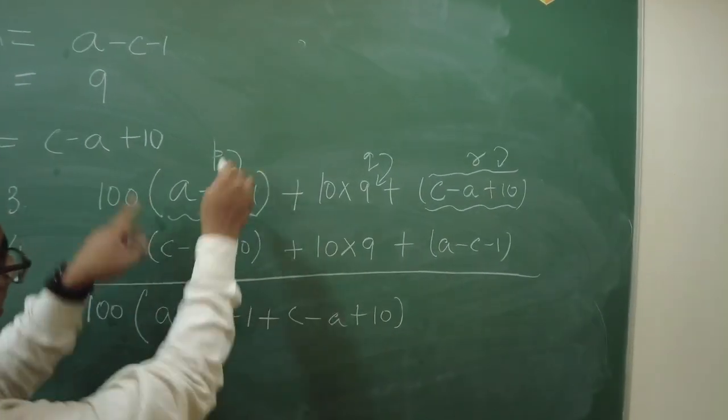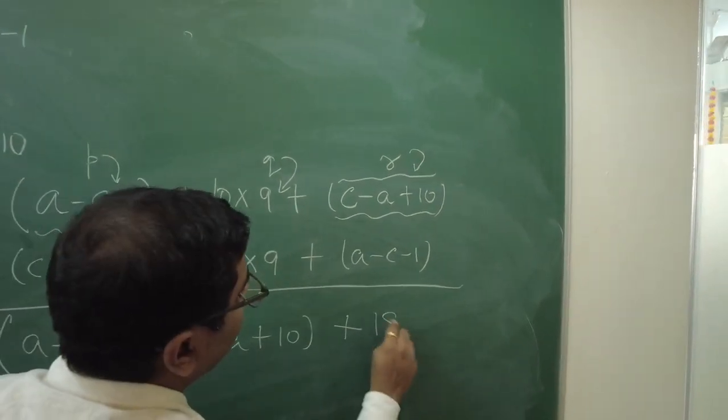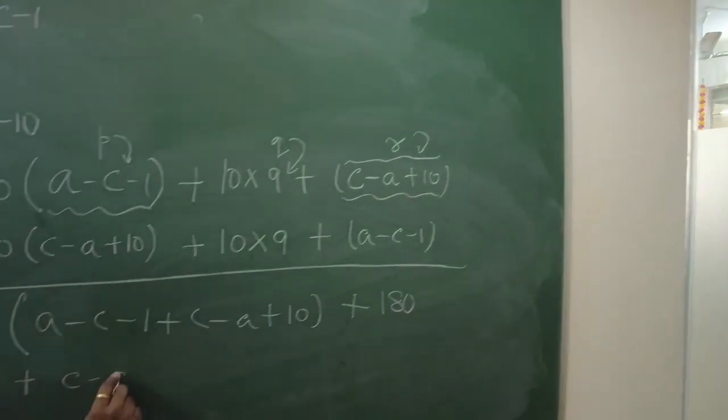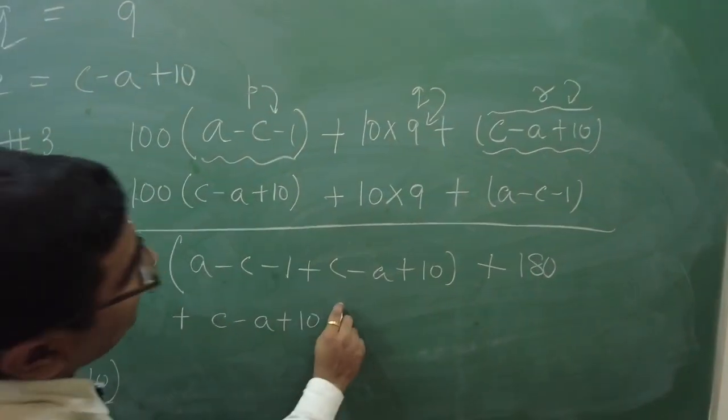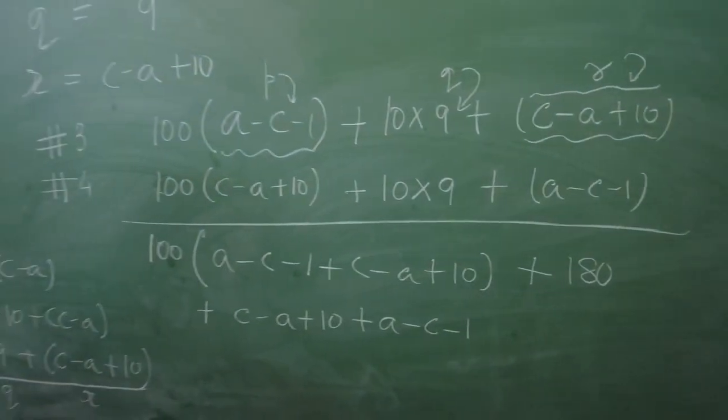First, this column sum is this one. This one is nothing but 90 plus 90, 180. And, this one, if you add, you will get C minus A plus 10. Then, plus A minus C minus 1.